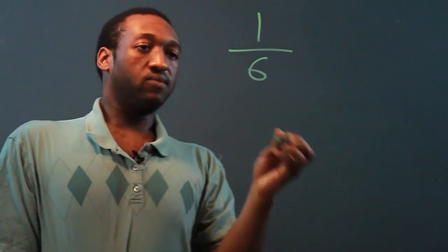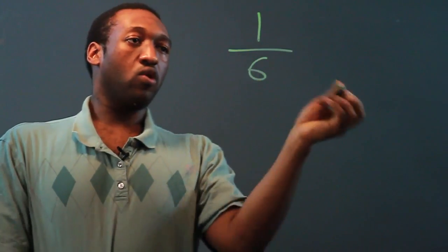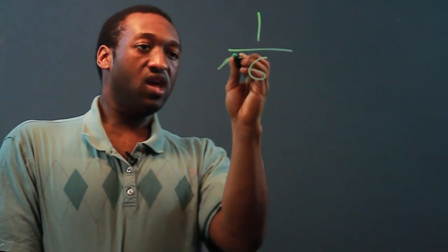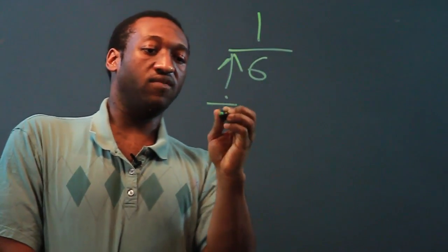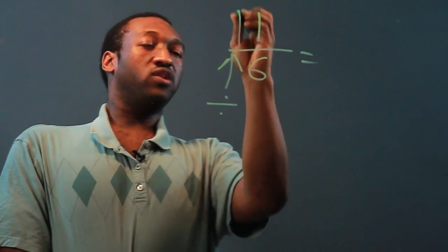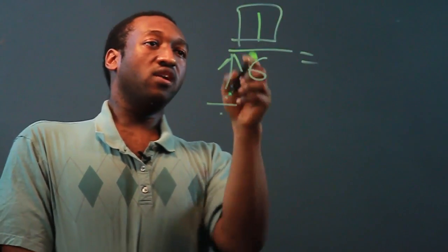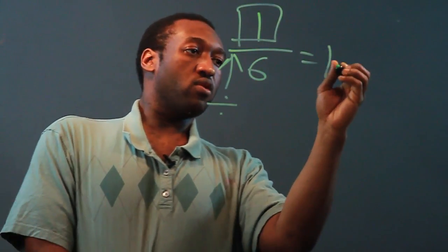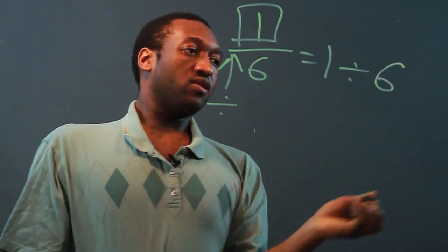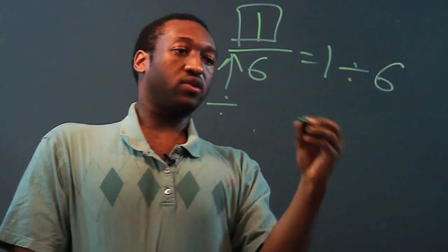Hi, my name is Omari Mack, I'm a math tutor, and today we'll talk about how to convert one-sixth into decimal form. So let's write the fraction, one over six. What we want to remember with all fractions is that the fraction bar is just a division sign. So what we do is we divide the numerator by the denominator, and this will give us our decimal form.